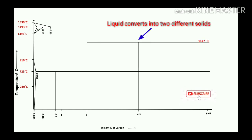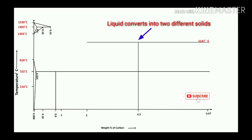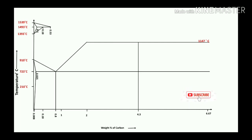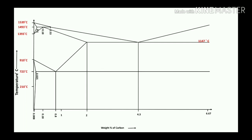One more reaction: the eutectic reaction, which generally occurs at 1147°C and 4.3% carbon. Join these lines. This covers all the transformation lines on the iron-carbon diagram.